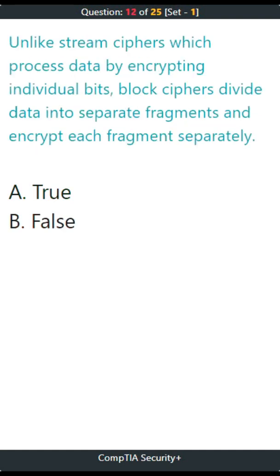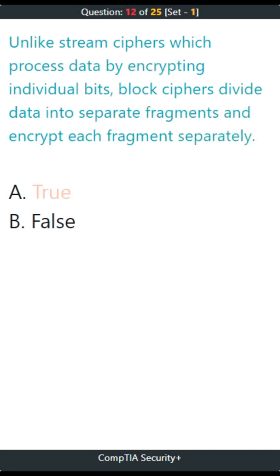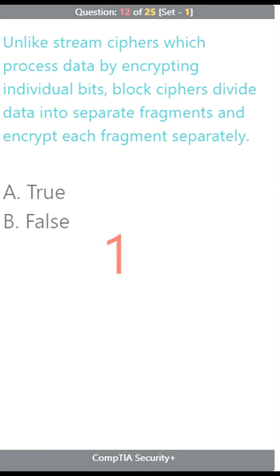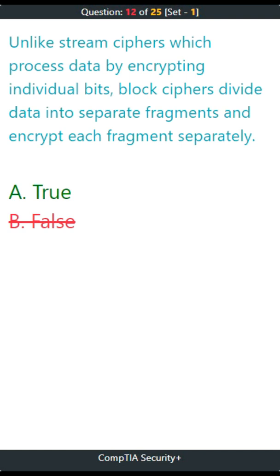Question 12. Unlike stream ciphers which process data by encrypting individual bits, block ciphers divide data into separate fragments and encrypt each fragment separately. A. True, B. False. The correct answer is A. True.